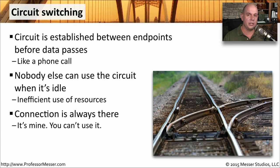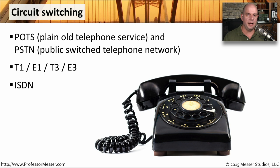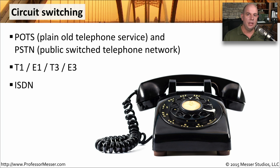Circuit switching also generally provides a guaranteed amount of bandwidth because you've built a circuit between those two locations, and you can put whatever you'd like over that link. Common circuit switched networks include the telephones we use — the plain old telephone service, or POTS lines — and PSTN, the public switched telephone network. Those are effectively the same thing.